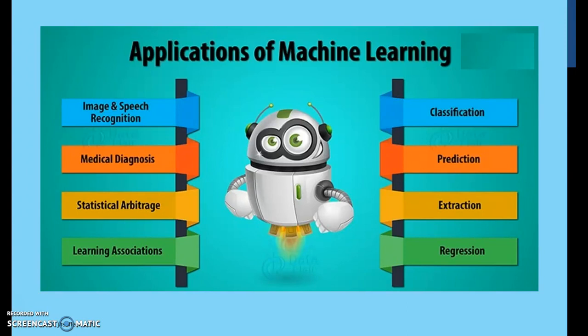Statistical arbitrage, learning associations, classifications, predictions, extraction, and regression are also present in various different sectors where we are making use of machine learning to make the future better.